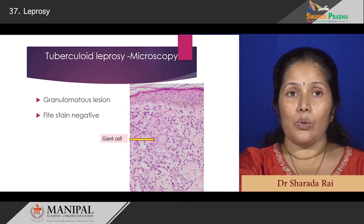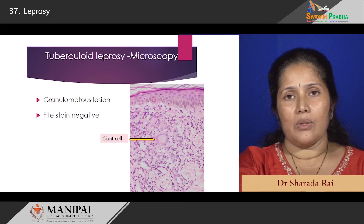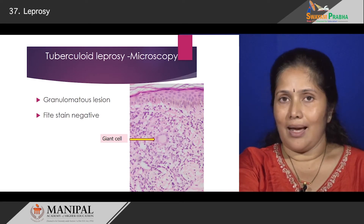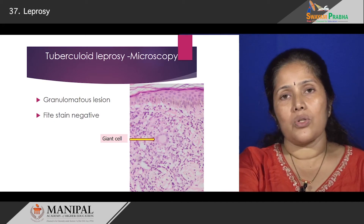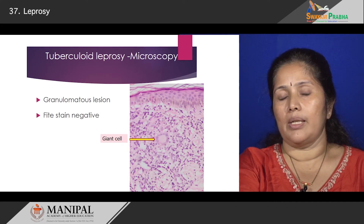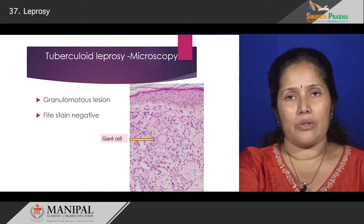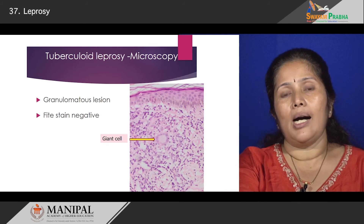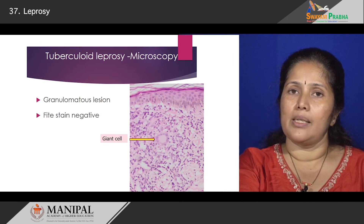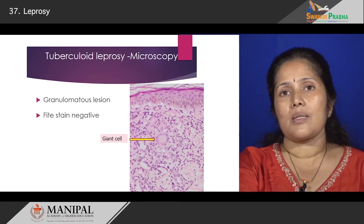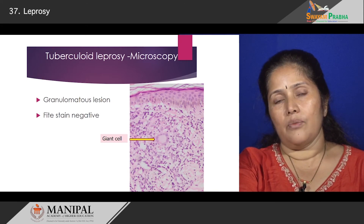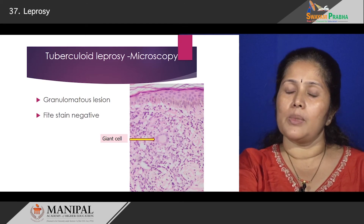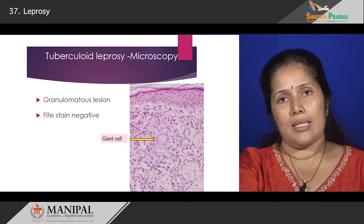To summarize what we learnt today: leprosy is caused by Mycobacterium leprae; it is inhaled and reaches the lung where it proliferates in macrophages, then disseminates via the bloodstream to the cooler parts of the body. Based on the immune response there is a huge spectrum of disease. At one end, lepromatous leprosy shows poor cellular response with foamy histiocytes full of bacilli that are Fite-positive. At the other end, tuberculoid leprosy shows good cell-mediated immunity with formation of granulomas, and the Fite stain is negative.